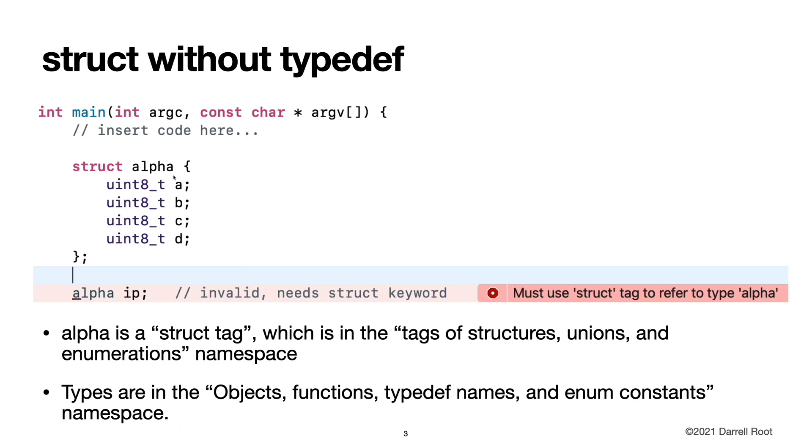Here we create a struct without a typedef. So here's the struct tag alpha, and we have our structure members. And then we attempt to create a new variable IP using alpha as if it were a type. But that fails because alpha is not a type, it is just a struct tag.